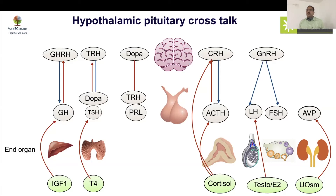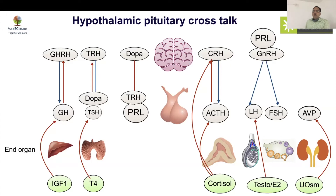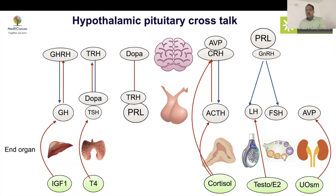There is also a cross-effect of TRH, which stimulates prolactin. Any condition of primary hypothyroidism will result in high TSH and high TRH, causing hyperprolactinemia. Therefore, before ordering an MRI workup, always check the thyroid profile first, as it can cause diagnostic confusion. Prolactin also suppresses LH and FSH levels via effects on kisspeptin neurons.